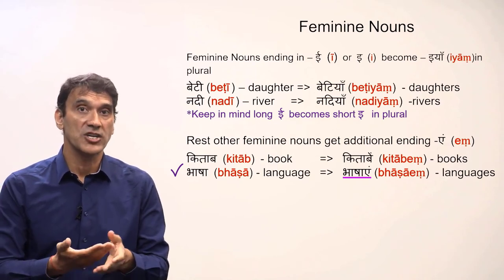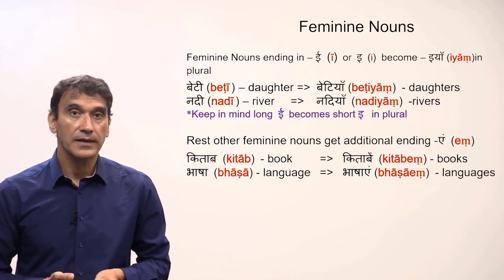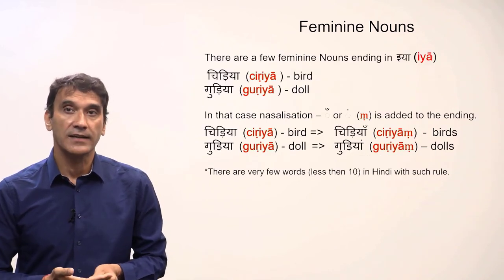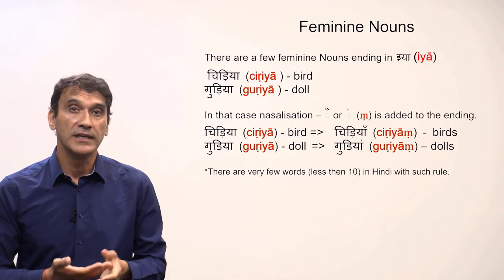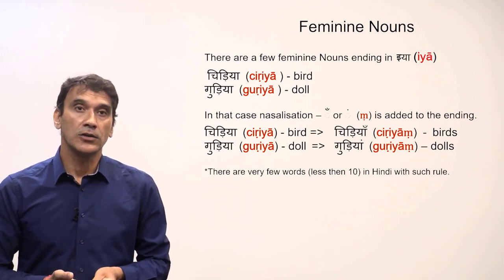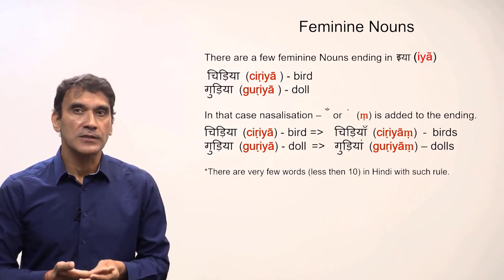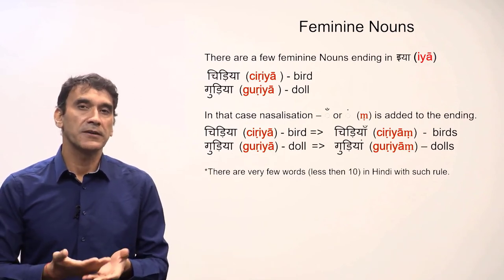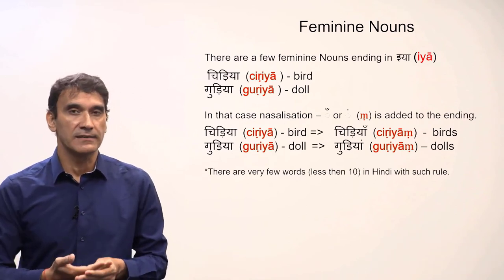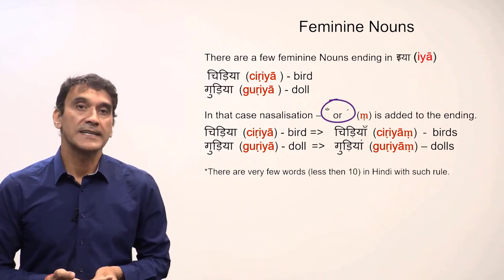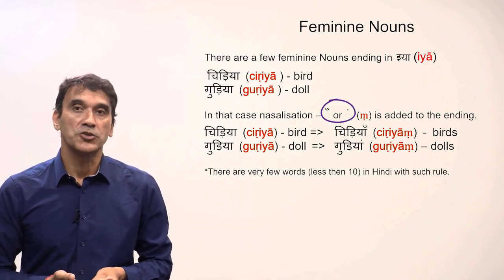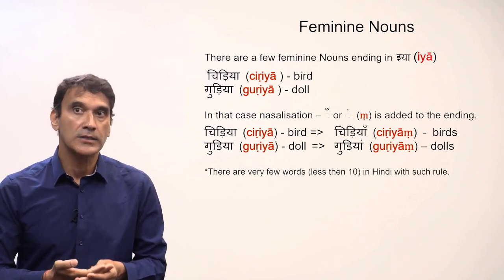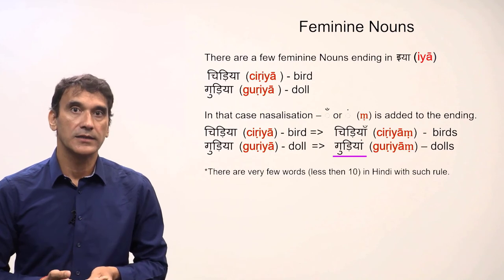There is a third type of feminine noun in Hindi that ends in 'yaa', such as 'chidiya' meaning 'a bird' and 'guriya' meaning 'a doll'. Keep in mind there are very few such feminine words — no more than ten — which is why we do not consider it a separate category. Such nouns get nasalization to make them plural: 'chidiya' singular becomes 'chidiyan' meaning birds; 'guriya' becomes 'guriyan' meaning dolls.